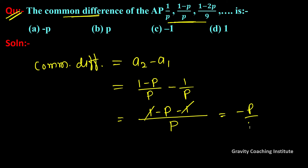Simplifying, p from p cancels, giving minus 1. So the common difference equals minus 1, and option C is the correct answer.